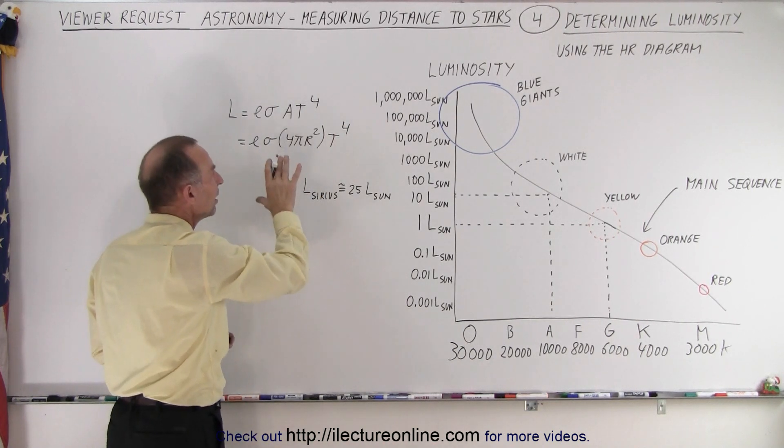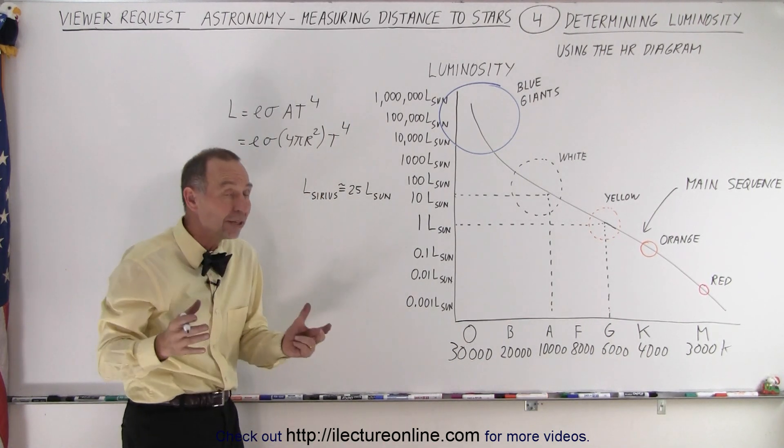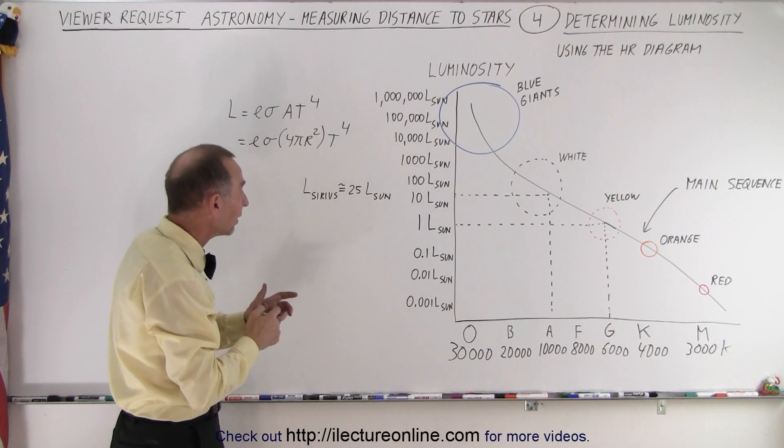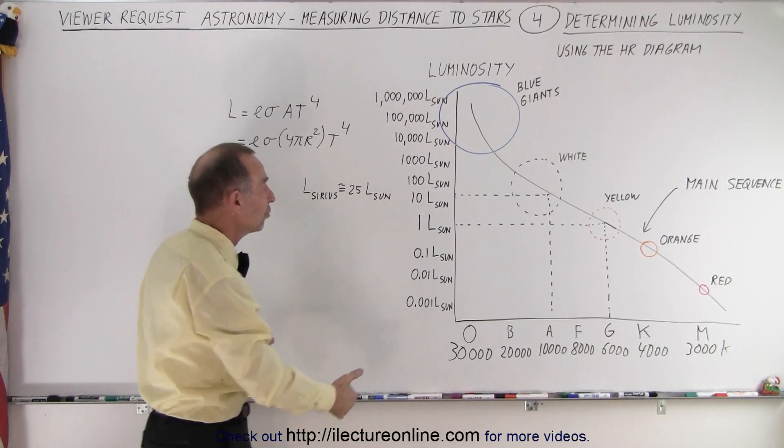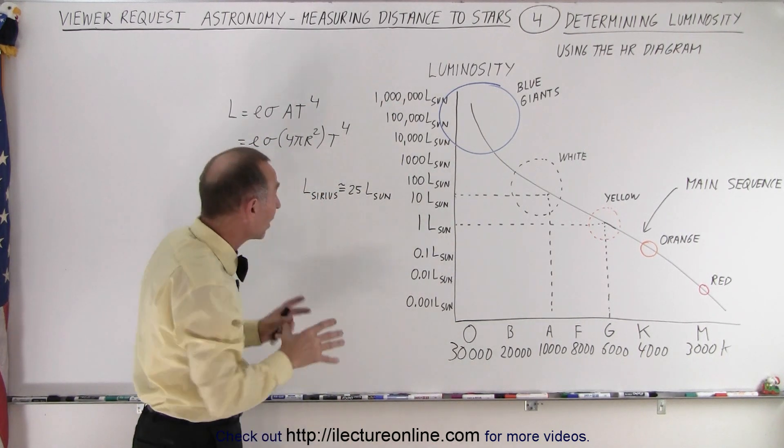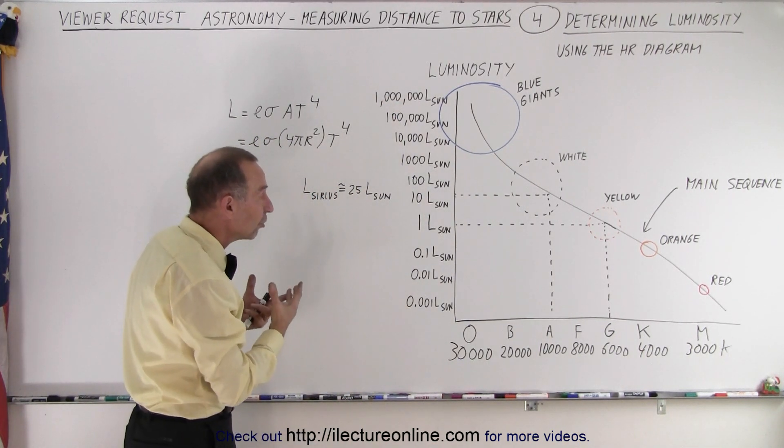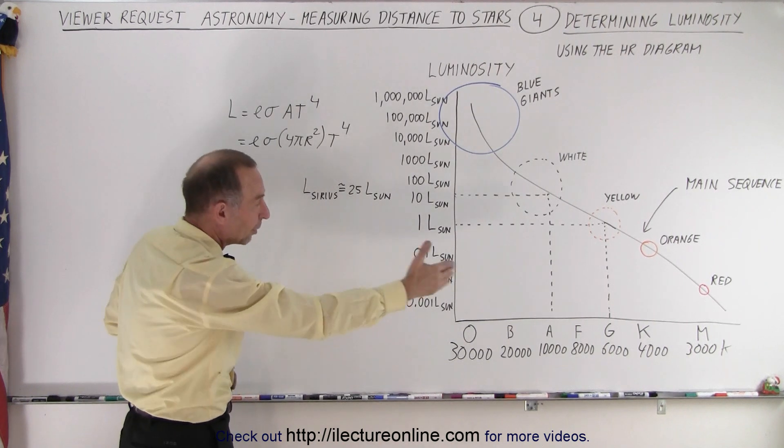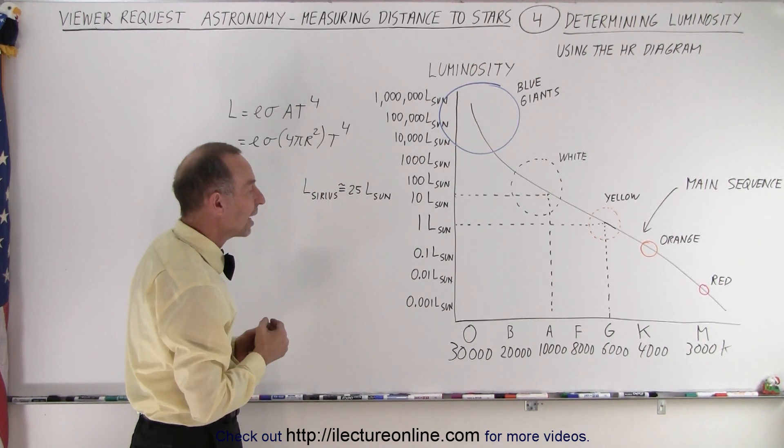So we can calculate the luminosity based upon the estimated radius of the star and based upon the calculated temperature. So notice that these values here are calculated using the concept of the Stefan Boltzmann's law. The presumed size of the star based upon where it belongs in the main sequence on the HR diagram.